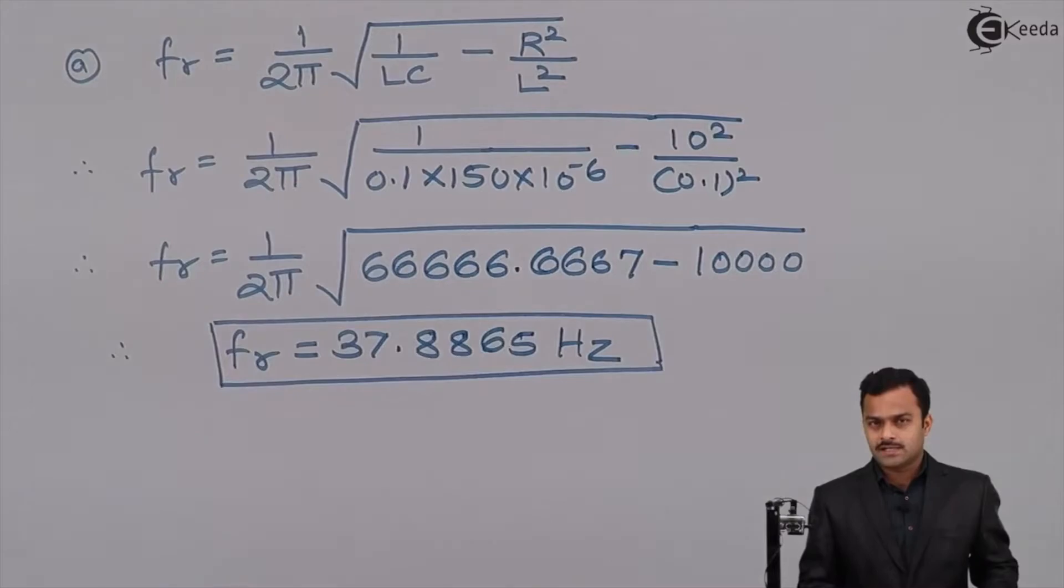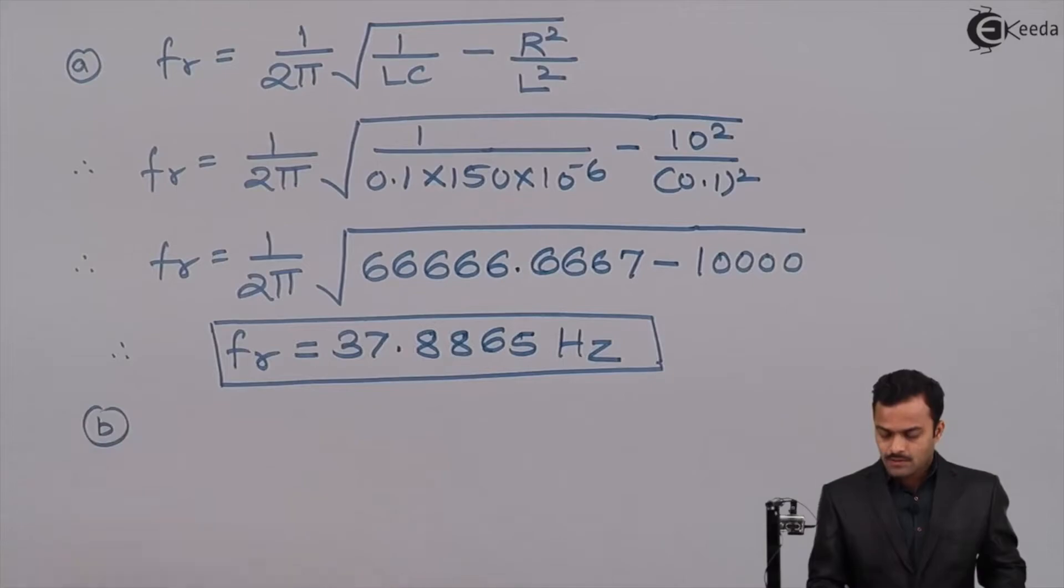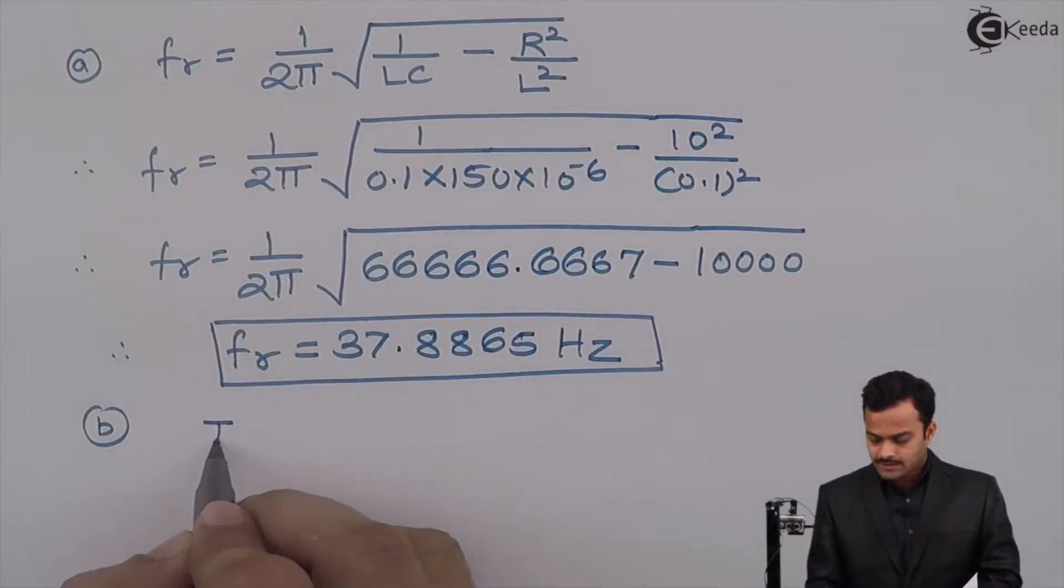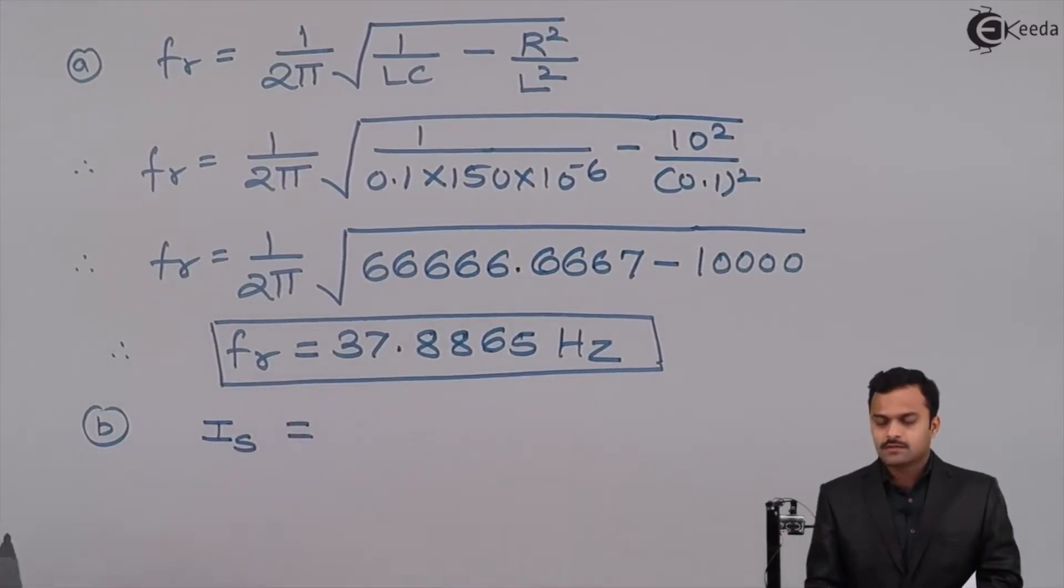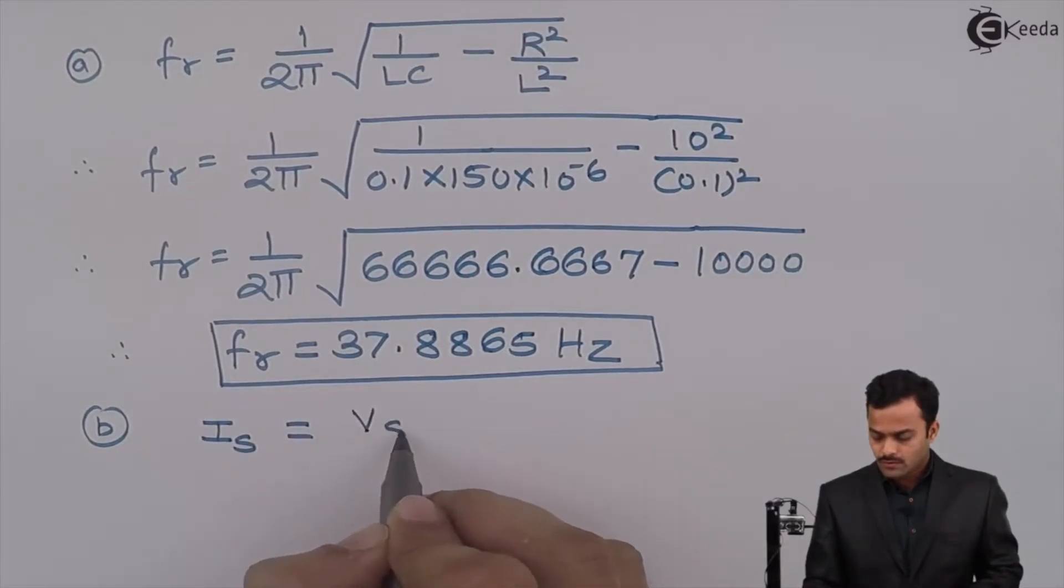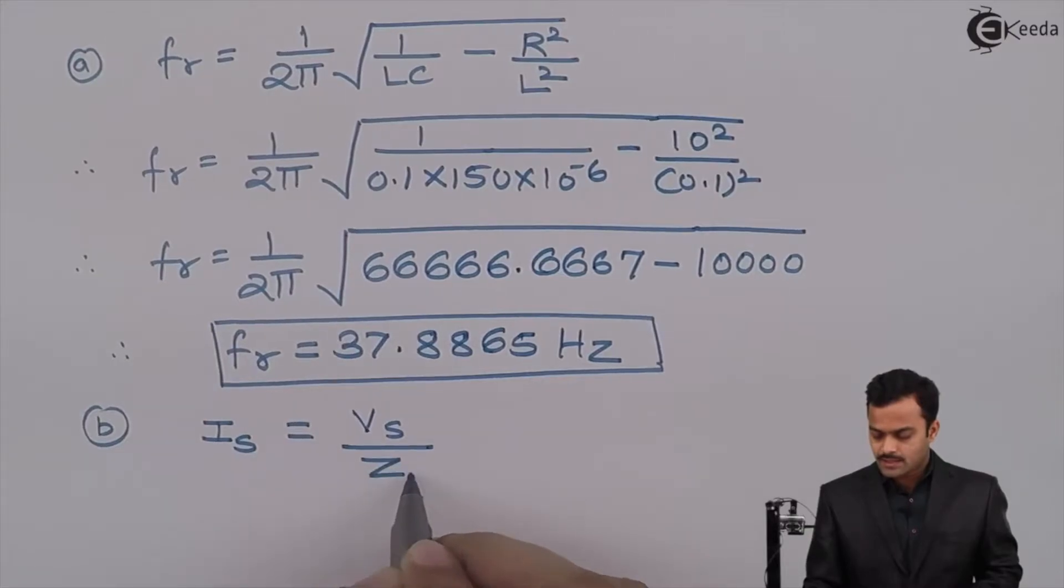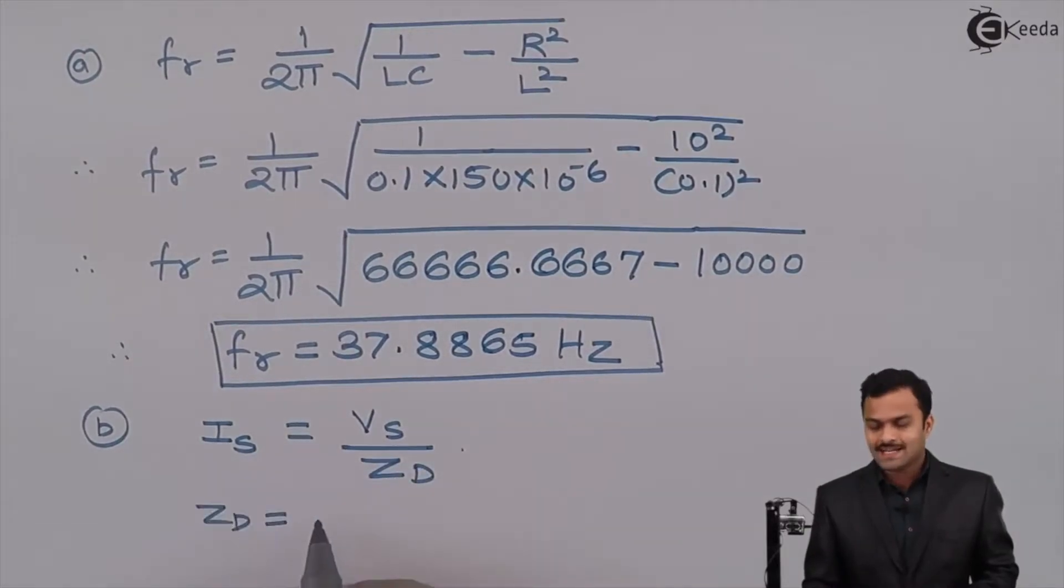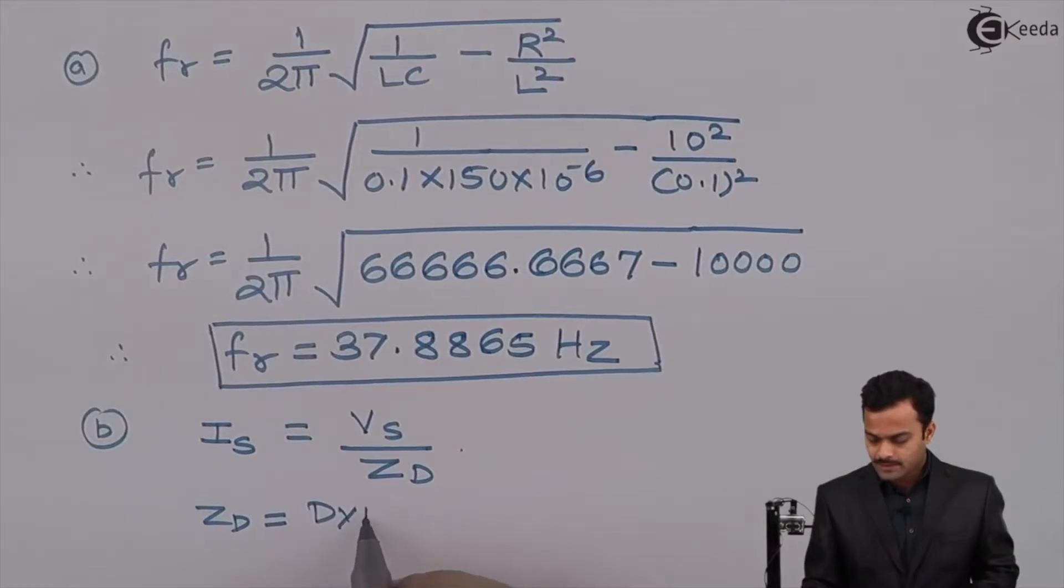First part is over, directly by applying the formula. Second part, I have to get what is the current given by the supply. So for that I should know what is the dynamic impedance, meaning current taken from the supply will be equal to Vs divided by Zd. Zd we will represent as dynamic impedance.